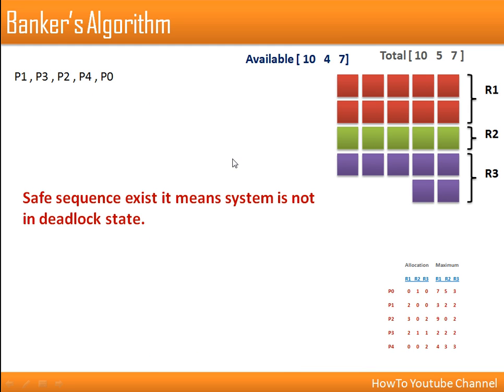We go for P4, then allocate remaining resources to P0. Allocating resources in this sequence — P1, P3, P2, P4, P0 — satisfies the requirement of every process. This sequence is known as the safe sequence. If a safe sequence exists, the system is not in a deadlock state. Banker's Algorithm checks whether the available resources can satisfy requirements of all processes in some sequence — if yes, there is no deadlock.